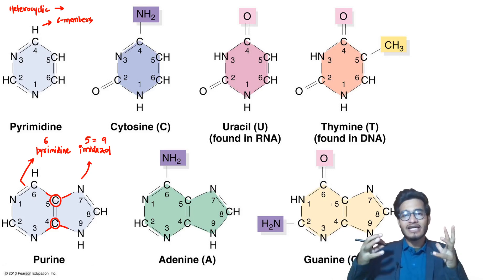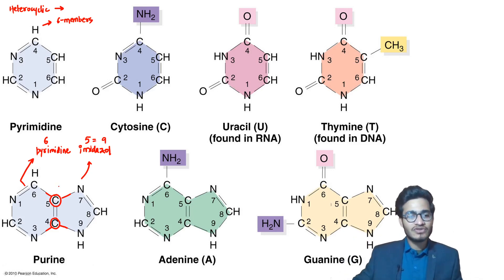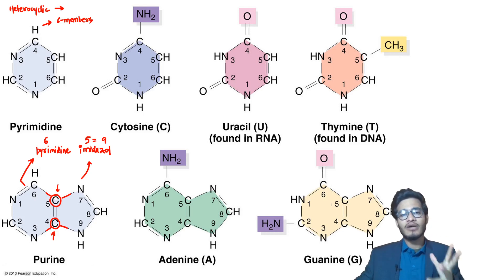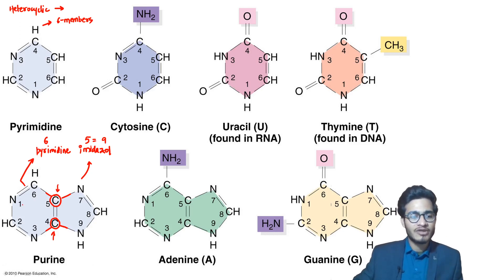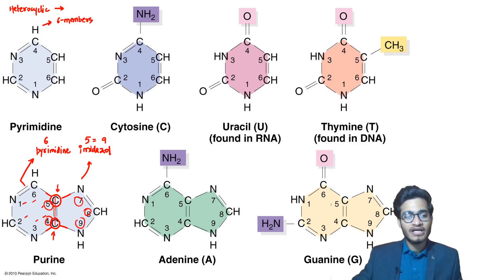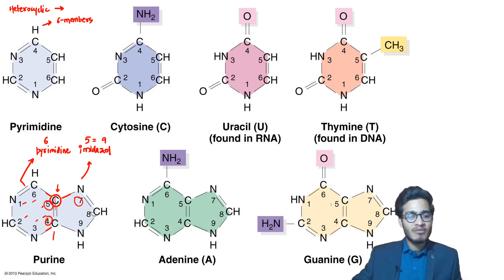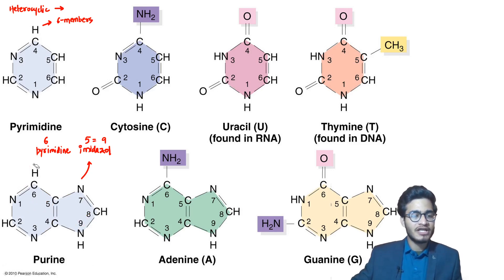Six plus five is eleven, but since they are fused at two positions, we subtract two — giving a nine-membered ring. So in case of pyrimidines it is a six-membered ring, but in case of purines it is a nine-membered ring — one part being the pyrimidine ring and the other being the imidazole ring.